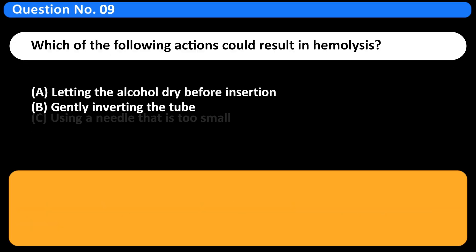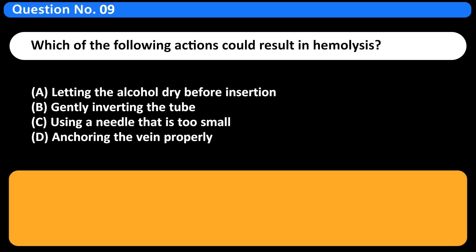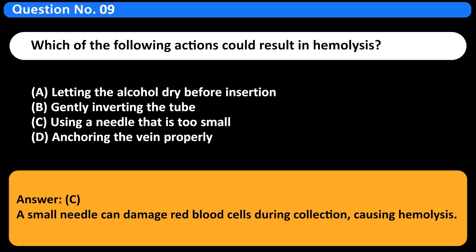Which of the following actions could result in hemolysis? A. Letting the alcohol dry before insertion. B. Gently inverting the tube. C. Using a needle that is too small. D. Anchoring the vein properly. Answer C. A small needle can damage red blood cells during collection, causing hemolysis.